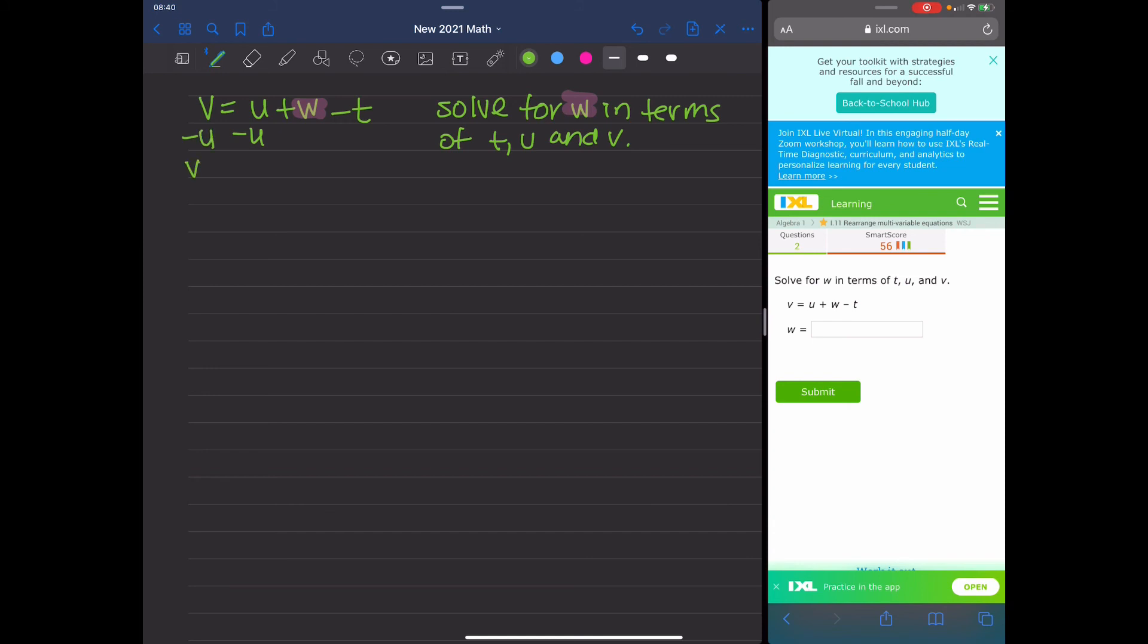So I get V minus U equals W minus T. And then I'm going to add T to both sides. So since there's nothing to combine them with, what you're going to do is you're going to just put them next to each other. So V minus U plus T equals W, because those Ts cancel out on the right. And that's my solution.